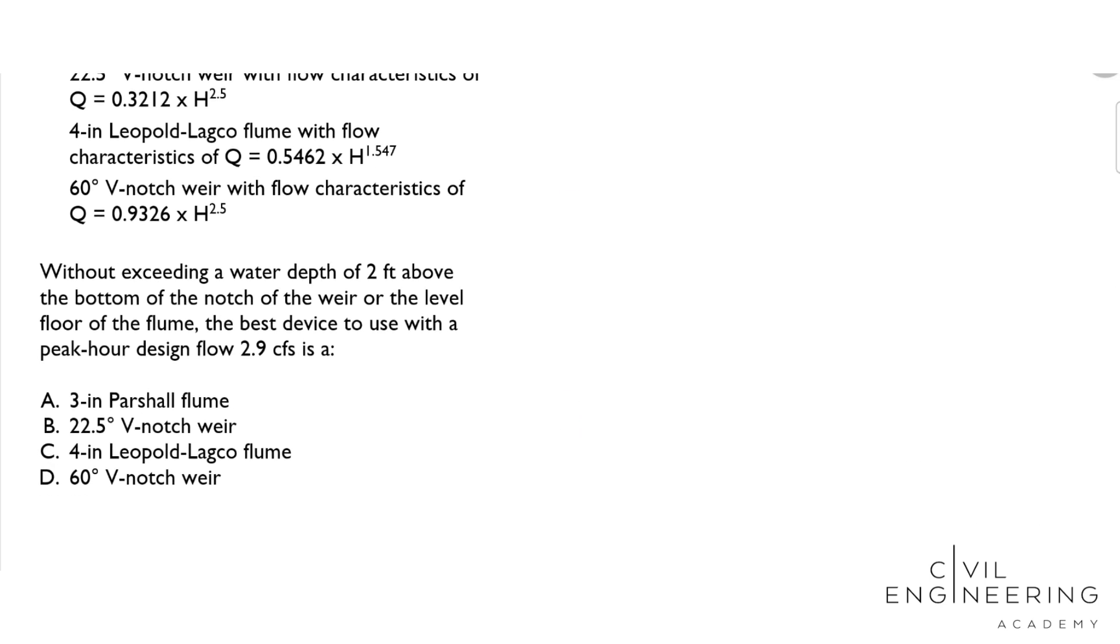Without exceeding a water depth of 2 feet above the bottom of the notch of the weir or the level floor of the flume, the best device to use with a peak hour design flow of 2.9 cubic feet per second is what?